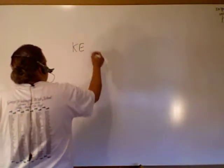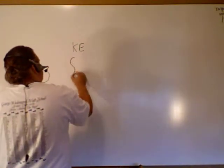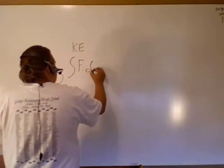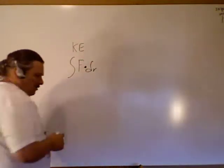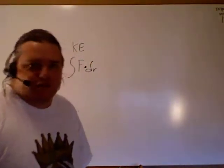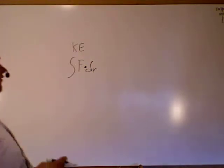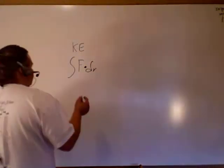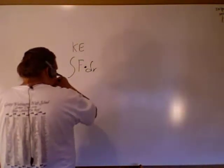If you remember right, we said work was the integration of force dot dr, where a dot product is a multiplication between two vectors. F is a vector, force is a vector, and displacement is a vector.